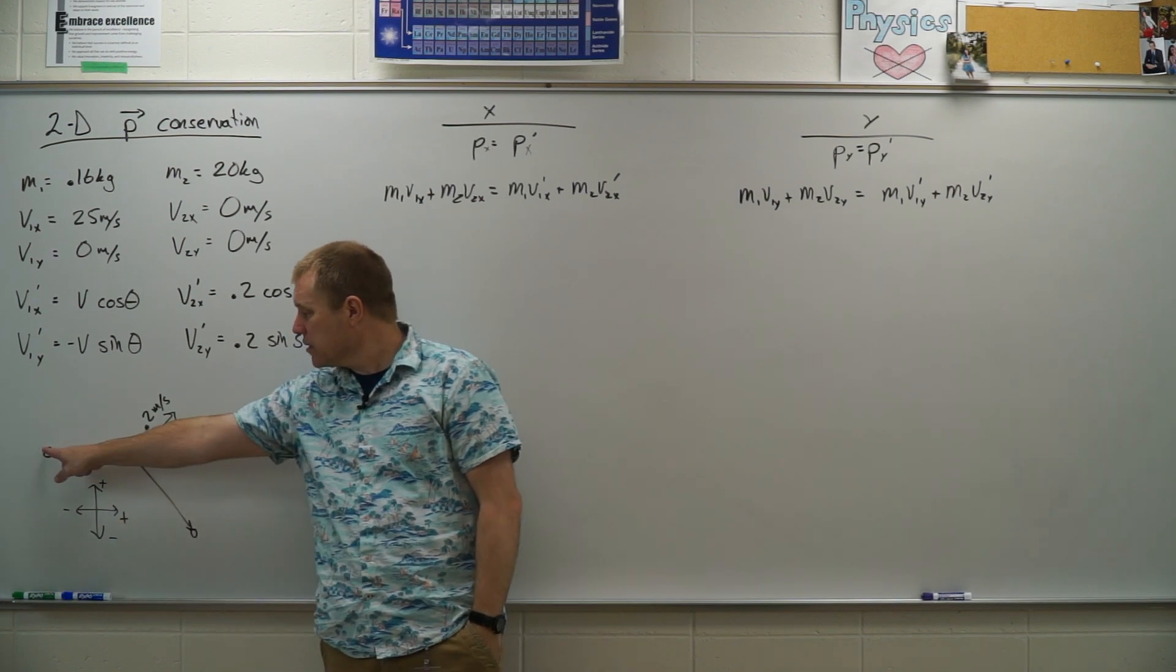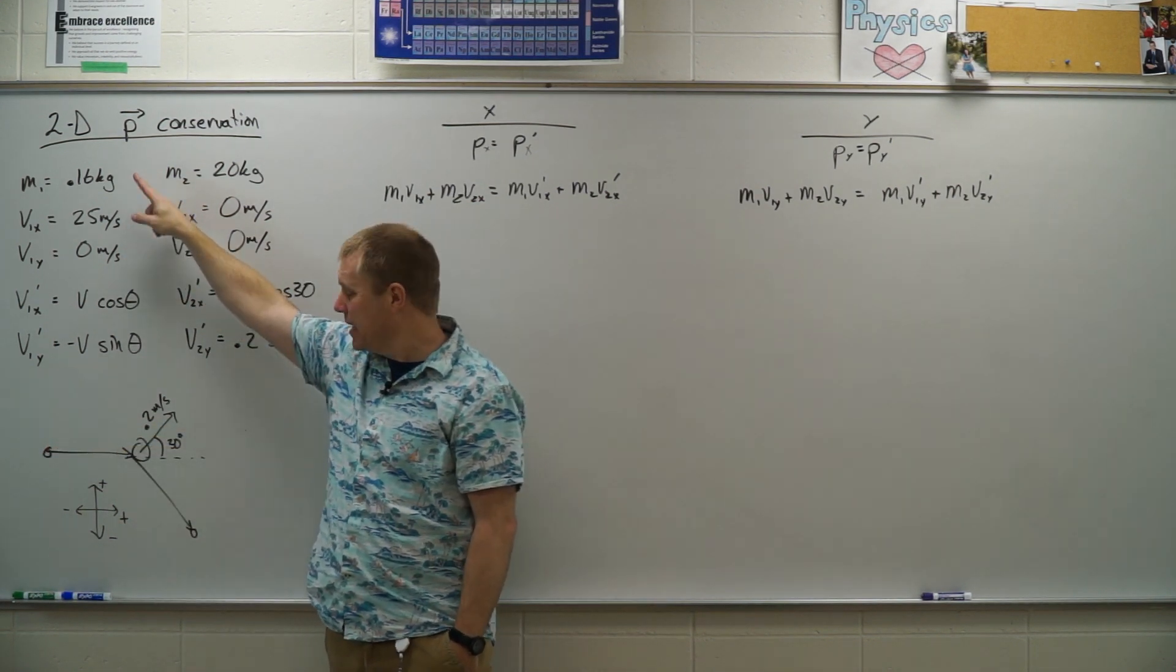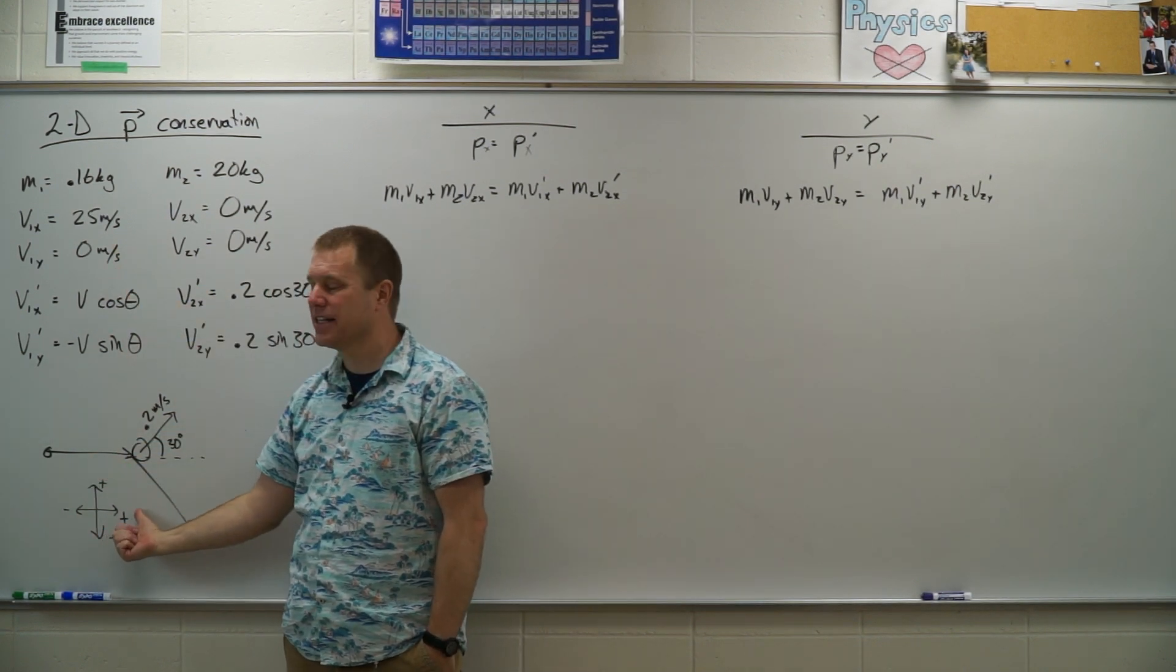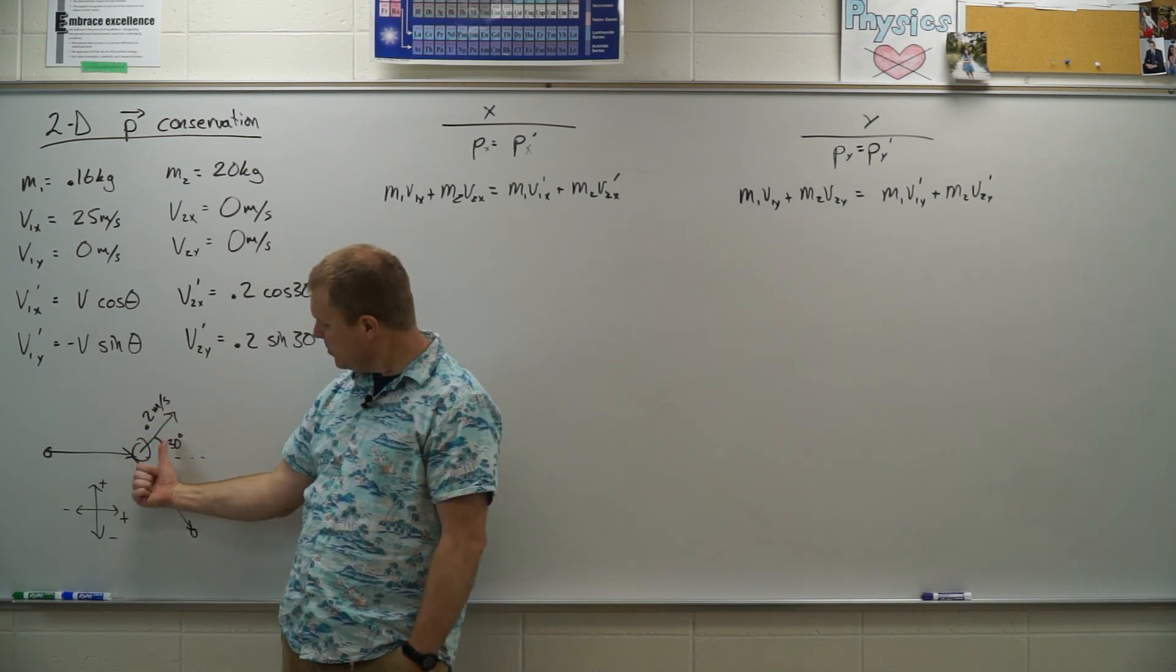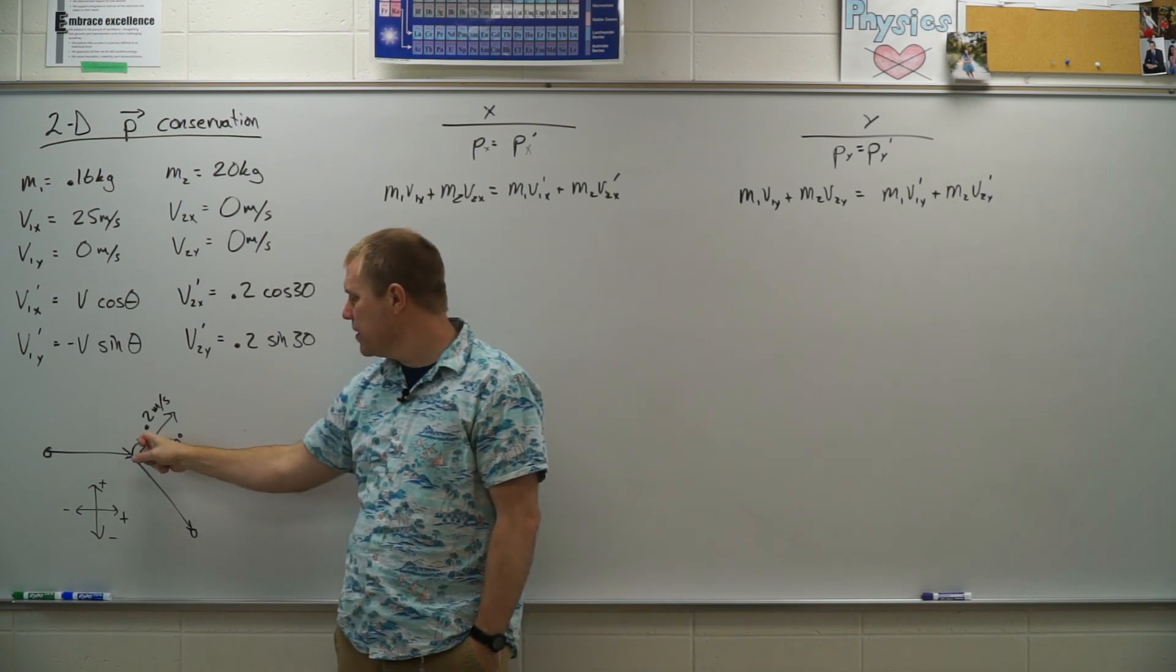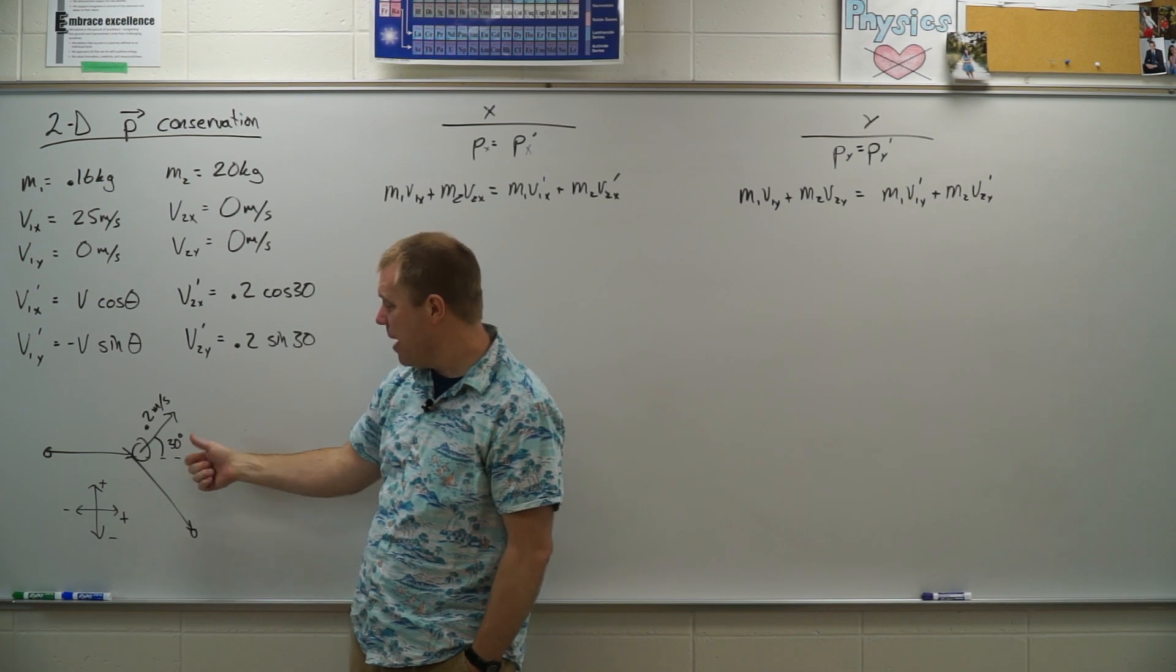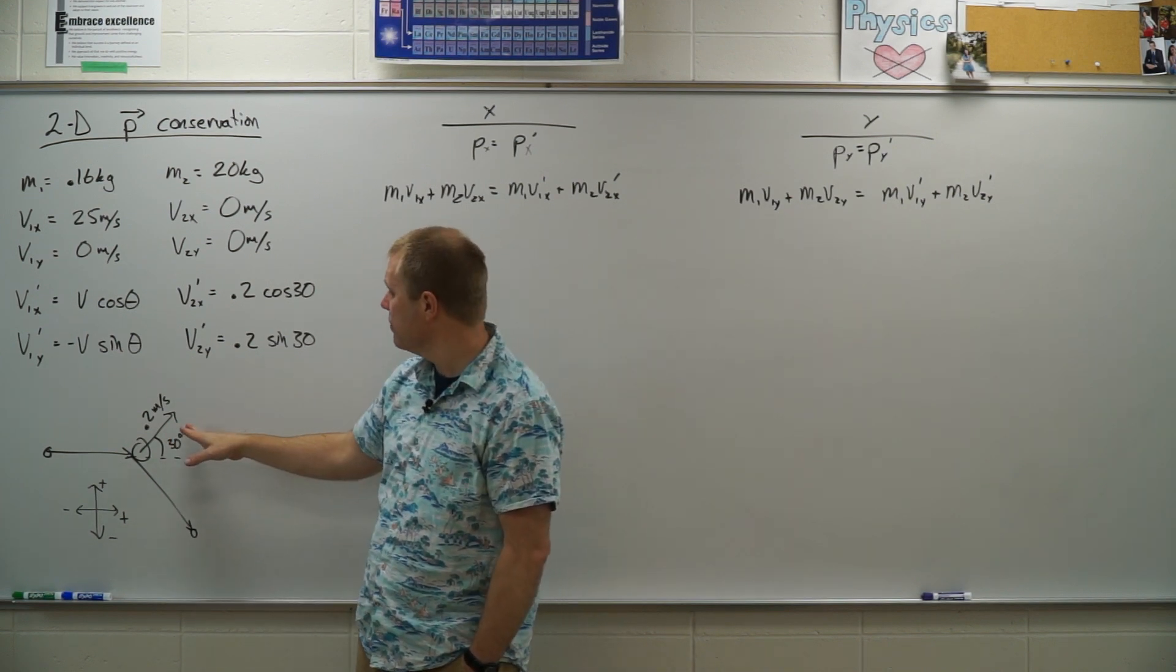Okay, so the puck's coming in at 25 meters per second. I did have to change grams to kilograms. It's only moving in the X direction and it's moving in my positive X direction. Zero in the Y. After the collision, the curling stone that was originally at rest now is moving at 0.2 meters per second at 30 degrees from the original path.